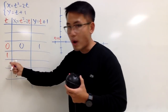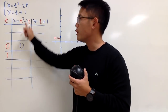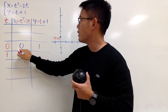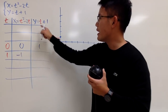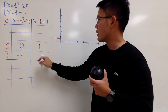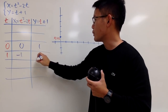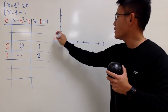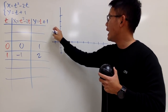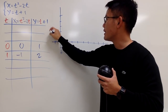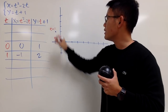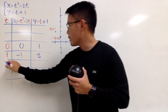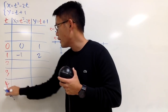When t is 1, plug in 1 into x: 1 squared minus 2 times 1 is negative 1. Then plug in 1 into y: 1 plus 1, which is 2. So the point is (-1, 2), right here. I'll indicate this is when t is 1. I'll continue and do up to when t is 4.